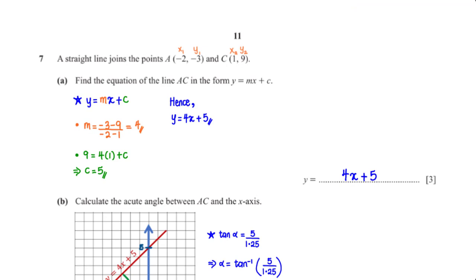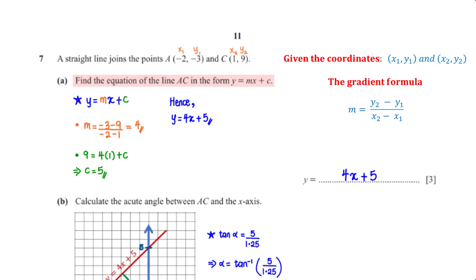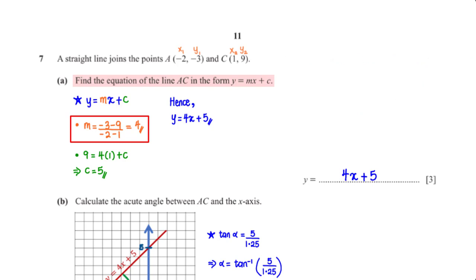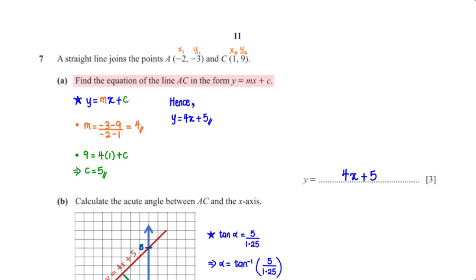A straight line joins point A (negative 2, negative 3) and C (1, 9). Find the equation of line AC in the form y = mx + c. The gradient m = (negative 3 minus 9) divided by (negative 2 minus 1), which equals 4. Plugging m = 4 and the point (1, 9) into the equation gives c = 5. So the equation is y = 4x + 5.